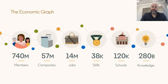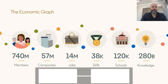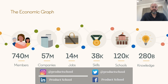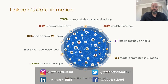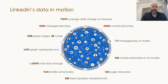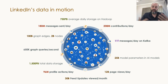Whether it's a profile created, a connection made, or an open job that got filled, all these actions contribute to building the LinkedIn economic graph — a digital mapping of the global economy across six dimensions. The LinkedIn data on the economic graph is truly mind-blowing: 96 million profile actions per day, 30 billion feed updates per month, 180 million messages sent every day, just to list a few.